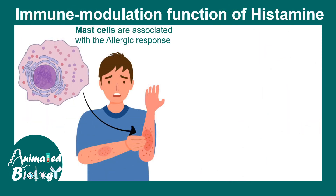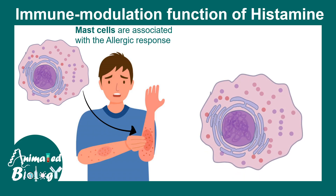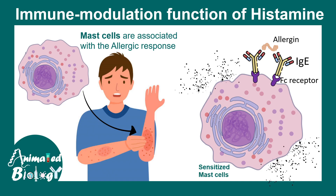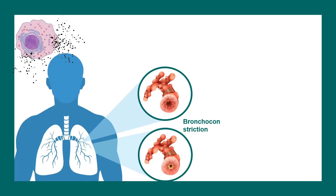Mast cells are strongly associated with allergic responses. The FcεRI receptor binds to IgE antibodies, and an allergen can cross-link these IgE antibodies — this is called the sensitized state. Once sensitized, mast cells are primed to release histamine-containing granules upon the next allergen exposure, triggering immediate degranulation.